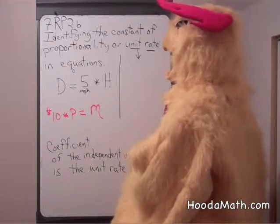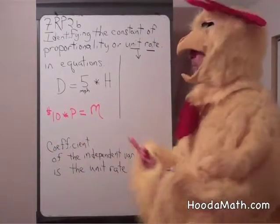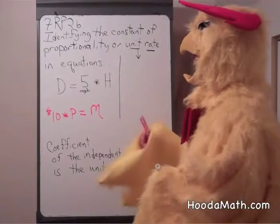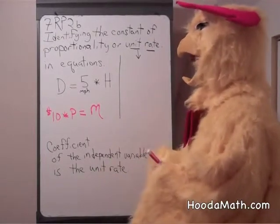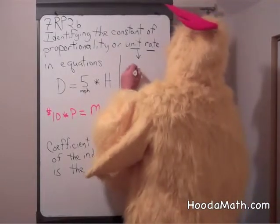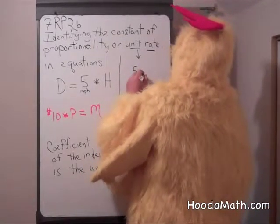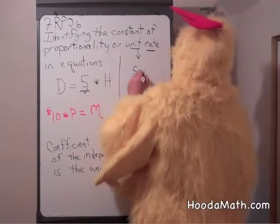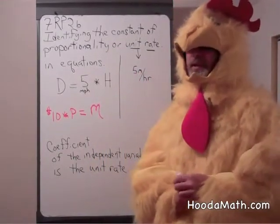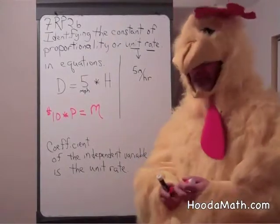So the unit rate for distance traveled at five miles per hour times the hours is five miles per hour. That is the unit rate. That is the speed the jogger is running.